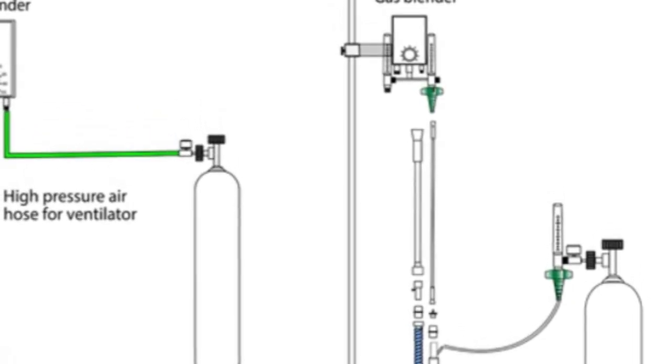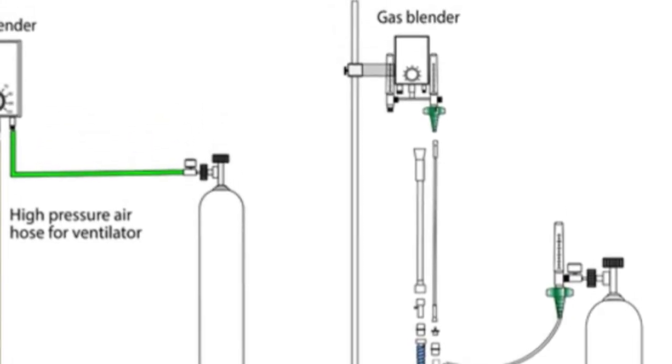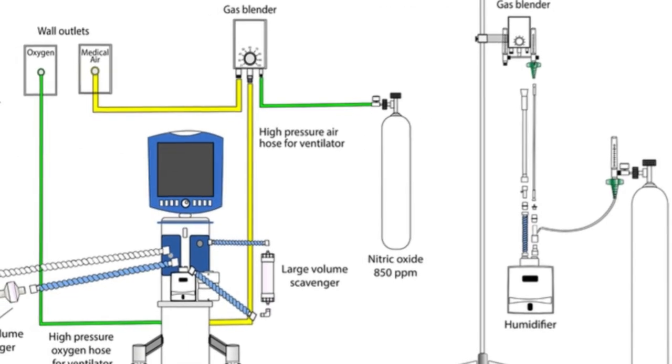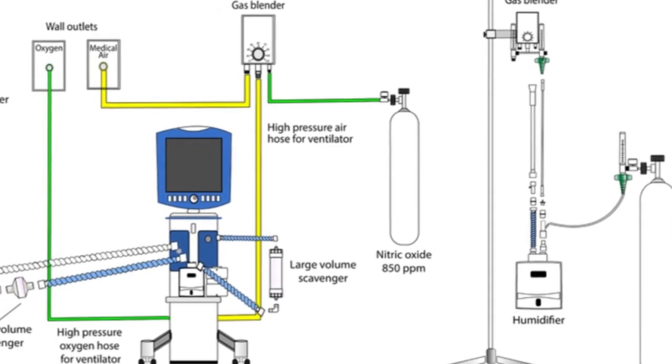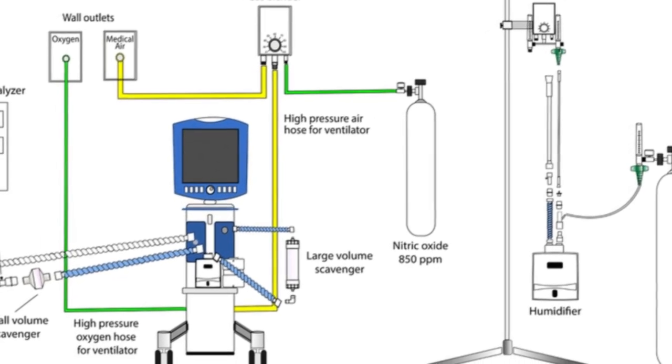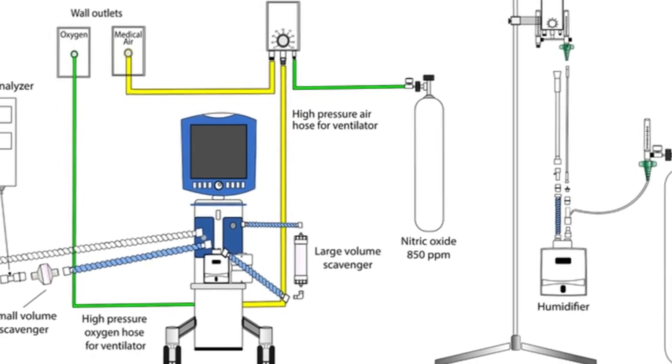ensuring that the patient is still receiving the target concentration of 80 ppm nitric oxide. The mixture obtained is then scrubbed of nitric oxide through a large volume scavenger and a small volume scavenger placed in series on the inspiratory limb of the circuit. The final amount of nitric oxide delivered is periodically analyzed with a nitric oxide analyzer directly before the mixture is inhaled by the patient.